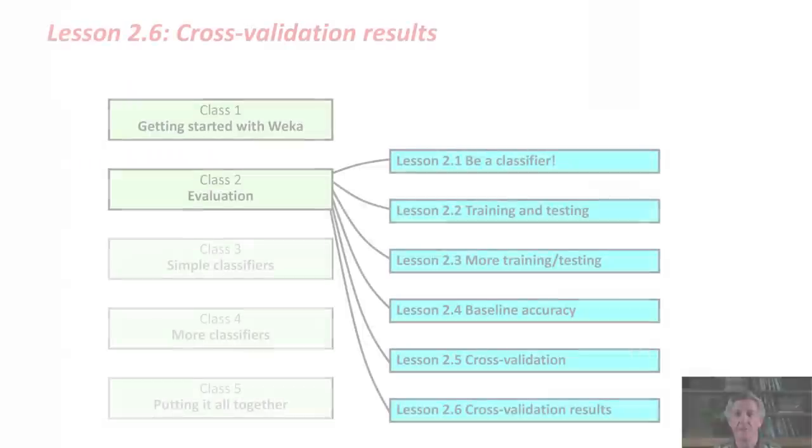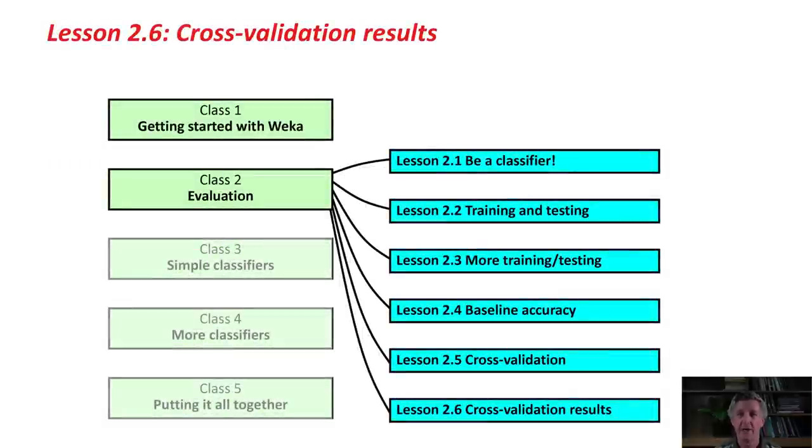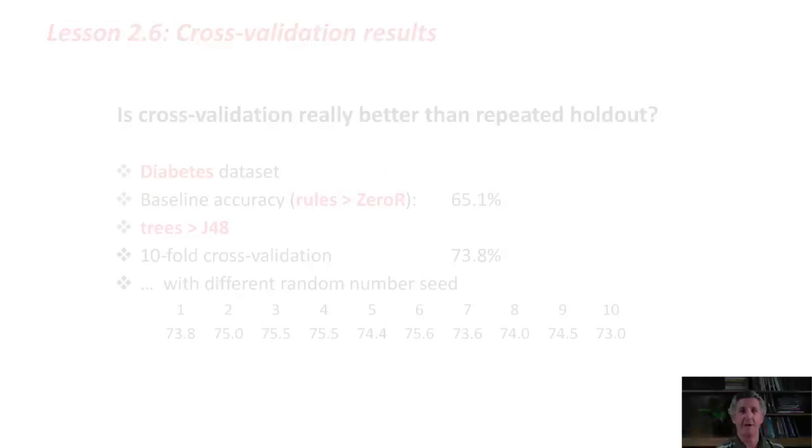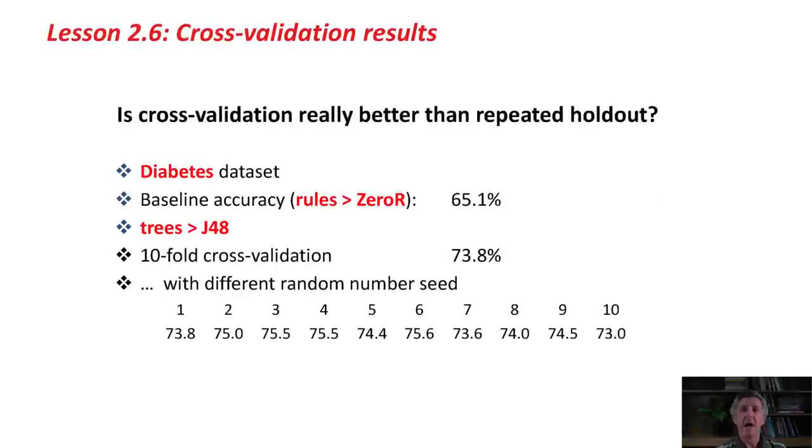Anyway, that's not what we're here for. We're here to talk about lesson 2.6, which is about cross-validation results. We learned about cross-validation in the last lesson. I said that cross-validation was a better way of evaluating your machine learning algorithm, evaluating your classifier, than repeating the holdout method. Cross-validation does things ten times. You can use holdouts to do things ten times, but cross-validation is a better way of doing things.